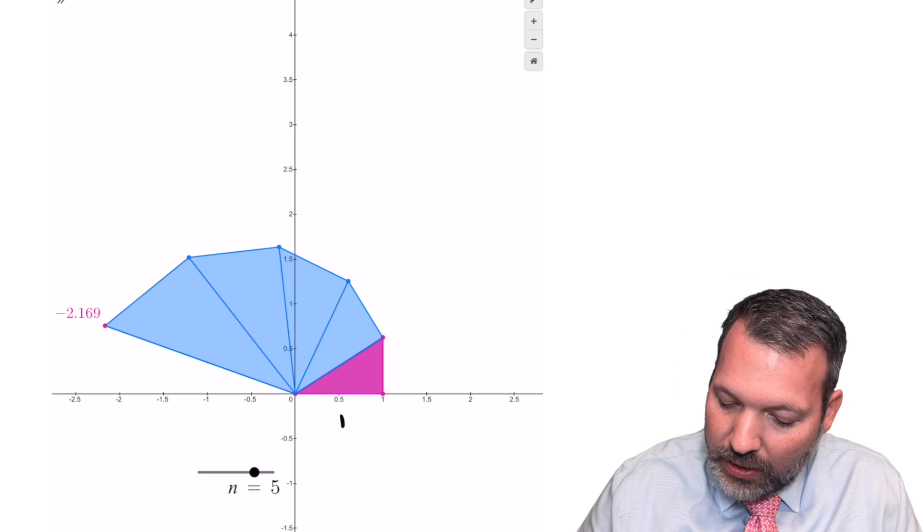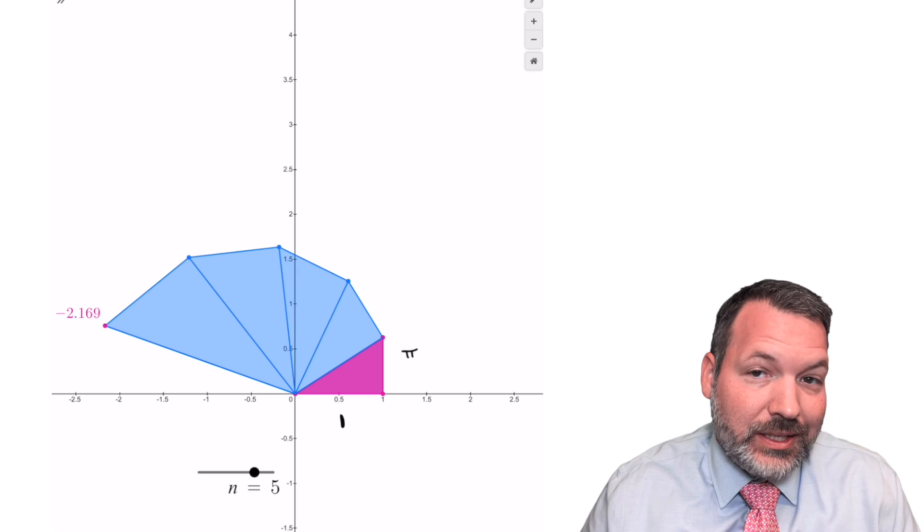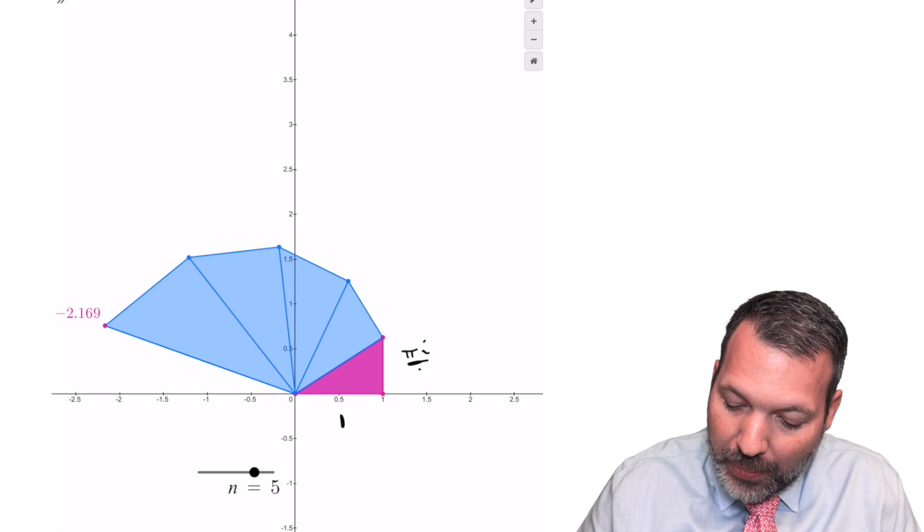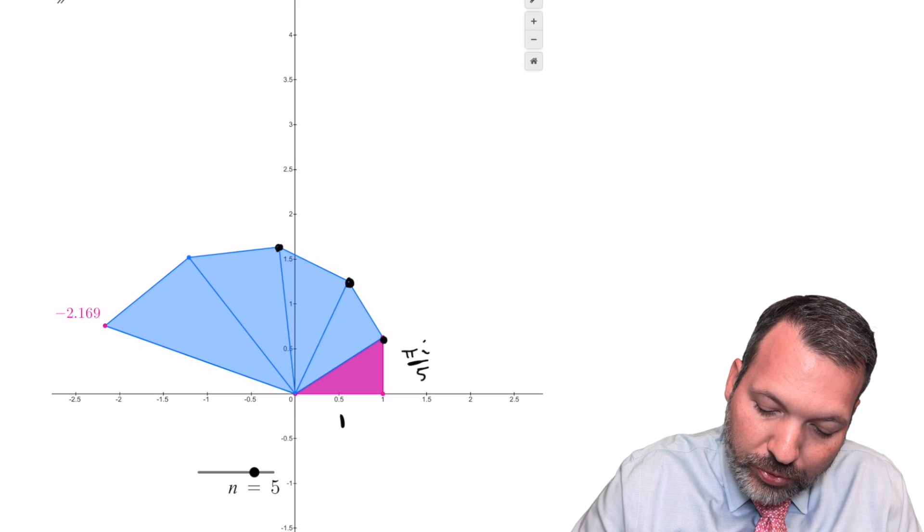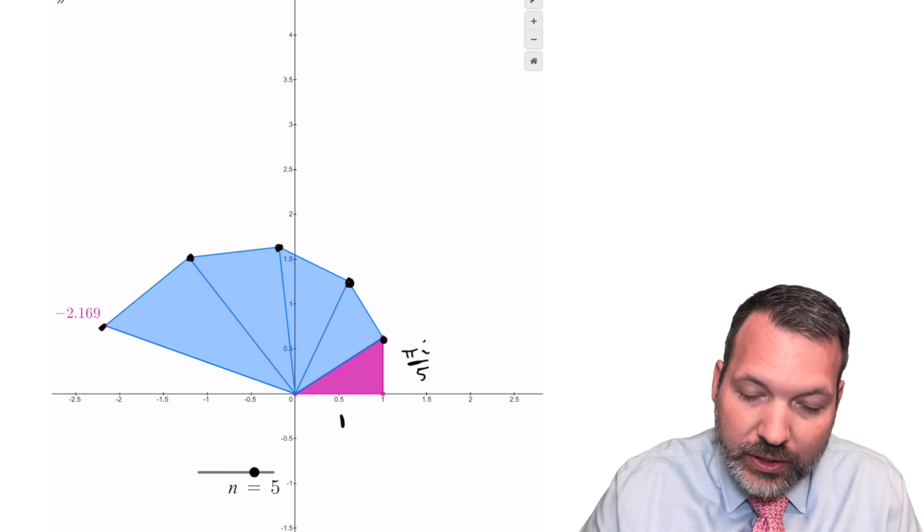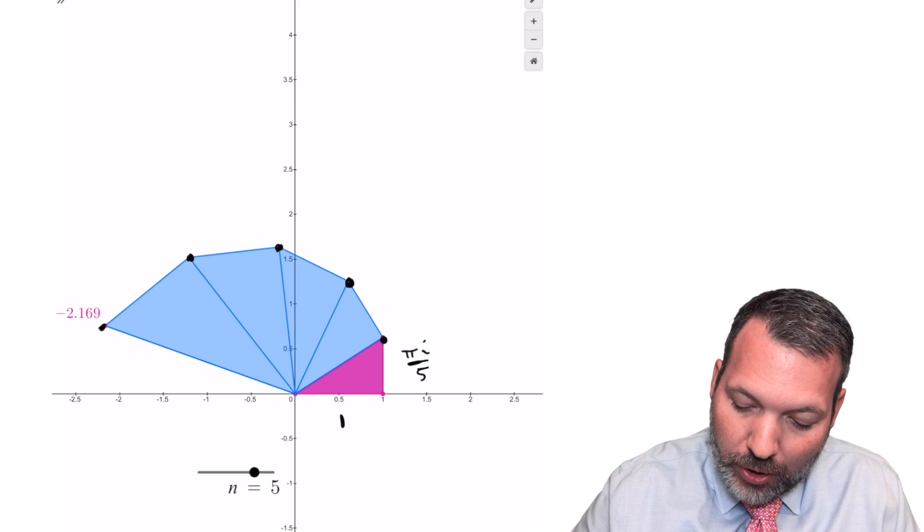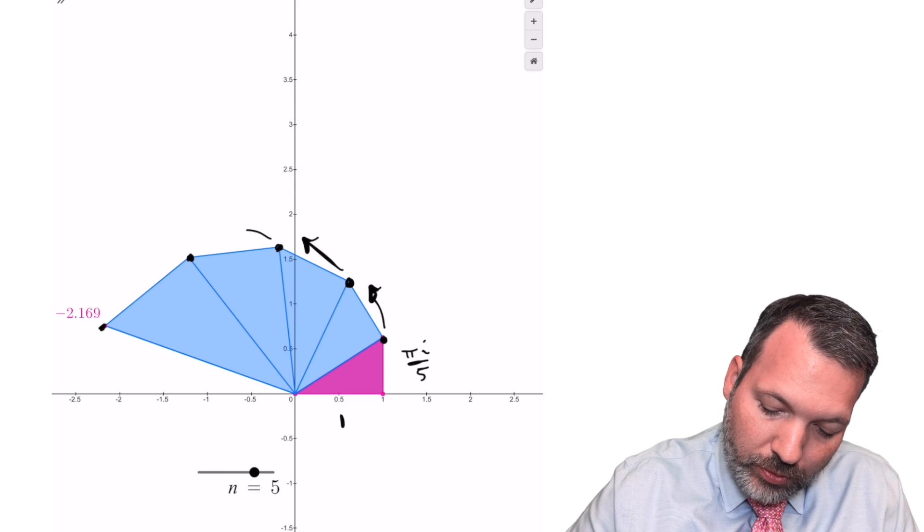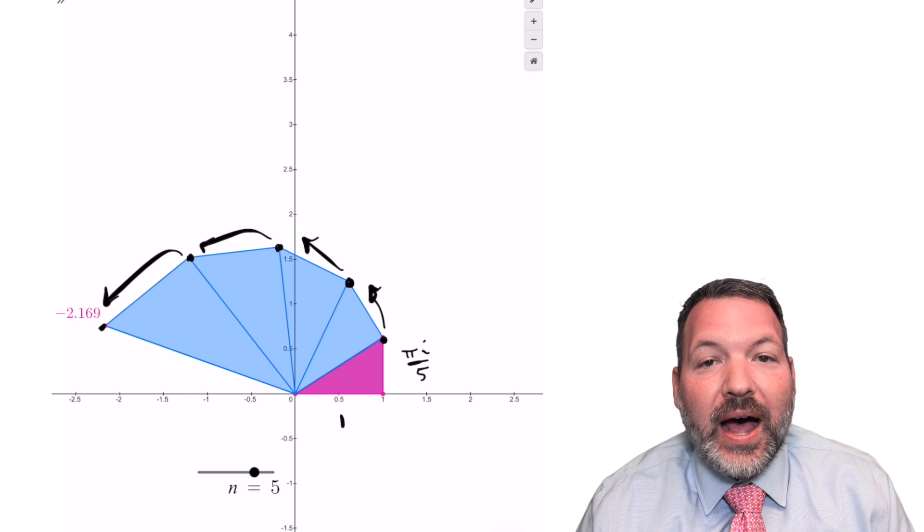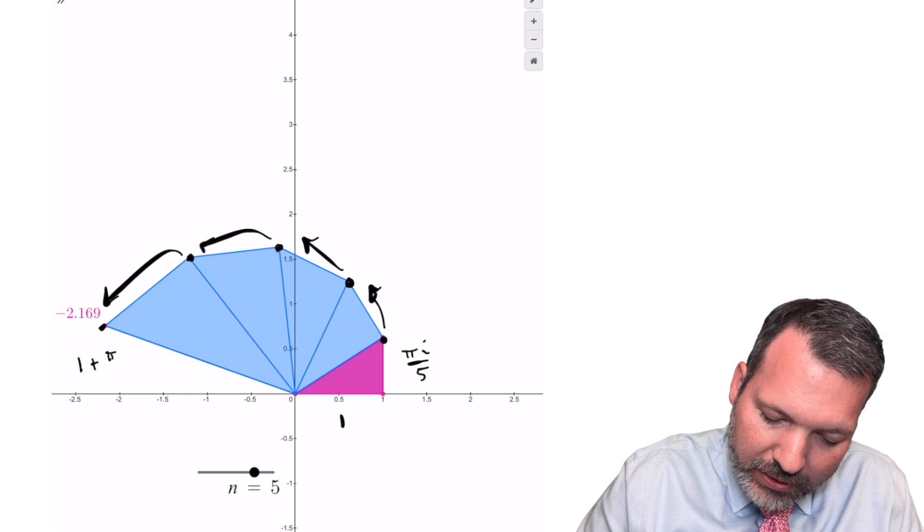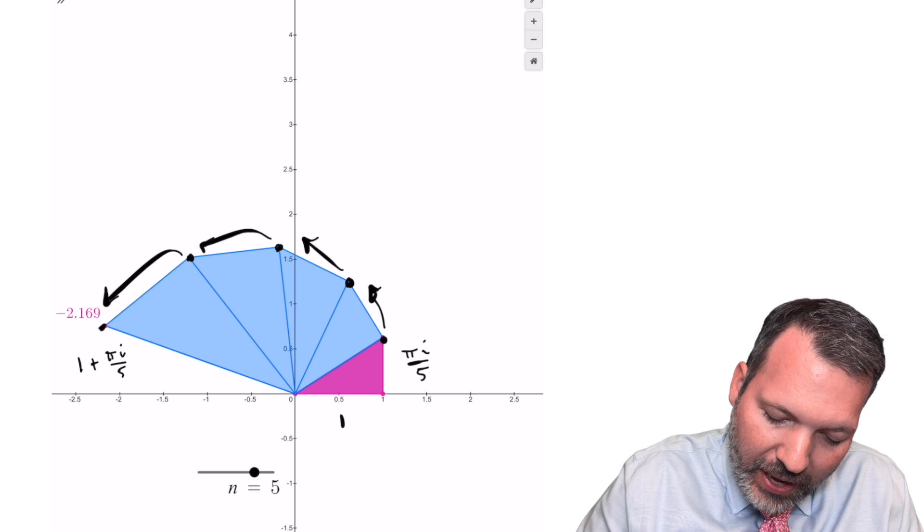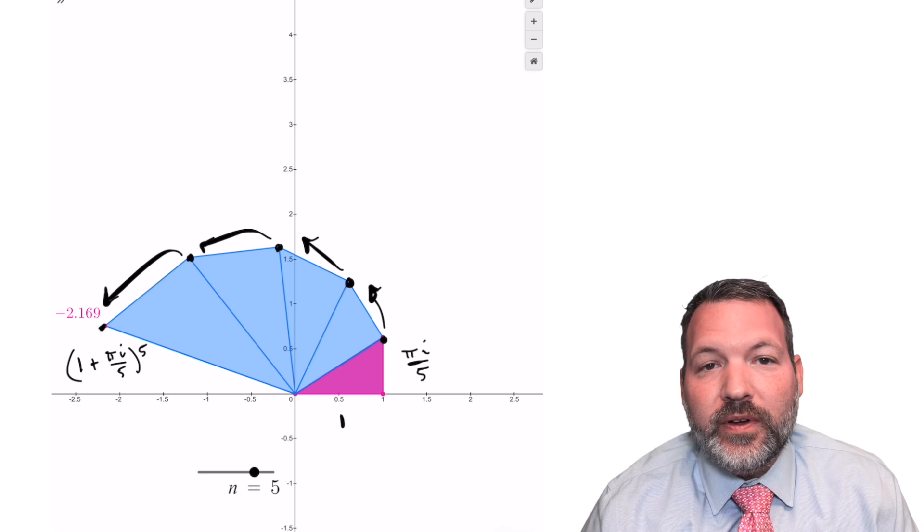For any given n, we are just letting our base stay 1 and our height be pi i divided by that number, and so then we're going to multiply through that number of vertices. In this case, you can see we're going to go 1 to 2 to 3 to 4 to 5 different vertices, meaning this vertex over here represents the complex number 1 plus pi i over 5 raised to the fifth power.